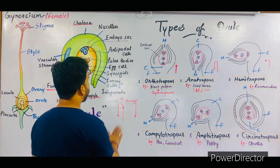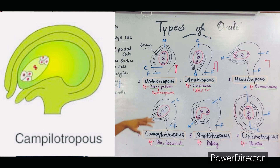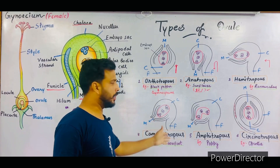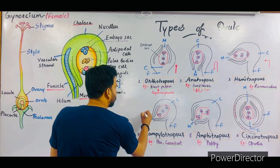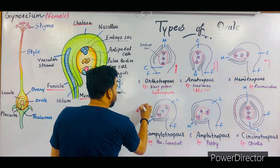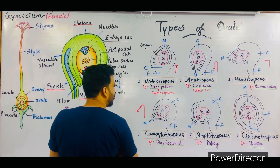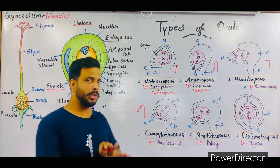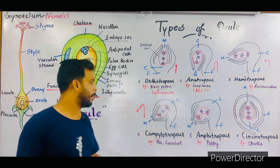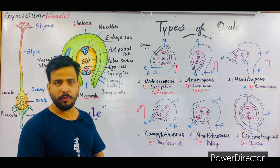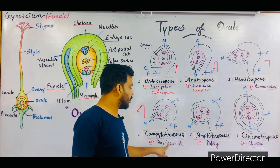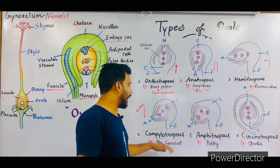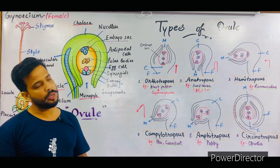The next ovule is campylotropous. In this type of ovule, the ovule is slightly curved towards the base. The micropyle, chalaza, and funicle are not in a straight line — the ovule is not straight but slightly curved. This type is termed campylotropous. The examples of campylotropous ovule are pea and goosefoot. Goosefoot is also known as Chenopodium, which belongs to the family Chenopodiaceae.